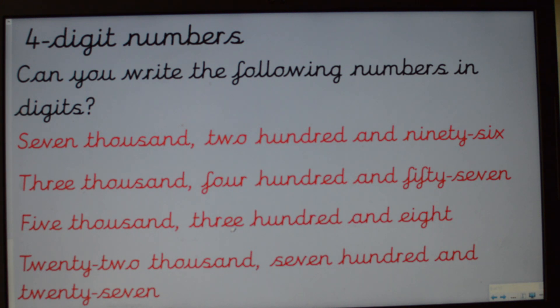Now, this one gets slightly harder. Five thousand, three hundred and eight. Can you write that one down? Be careful of the place value of each of your digits. And finally, the big number. Twenty-two thousand, seven hundred and twenty-seven. Have a go at writing that one down too.